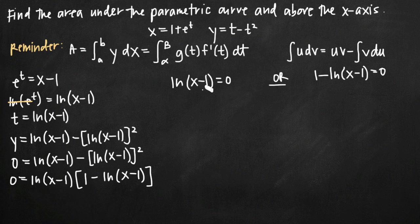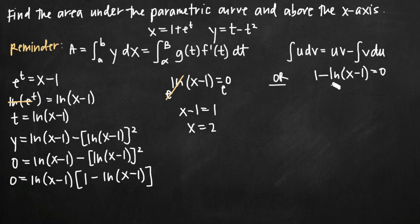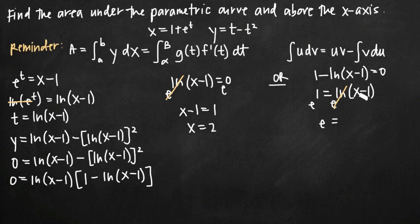For the first factor, we raise both sides to the base e so that e and natural log cancel, giving us x minus 1 equals e to the 0 which is 1, so x equals 2. For the second factor, we add natural log of x minus 1 to both sides to get 1 equals natural log of x minus 1, then raise both sides to the base e to get x minus 1 equals e, so x equals e plus 1.